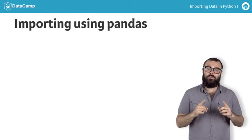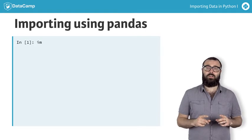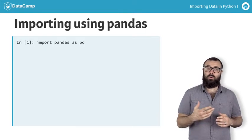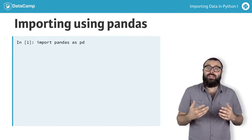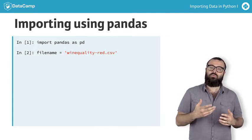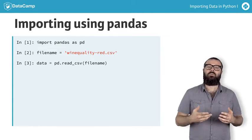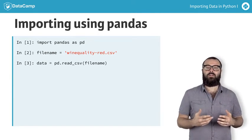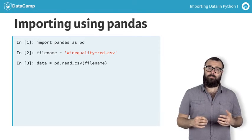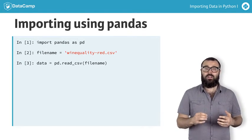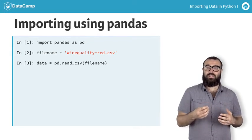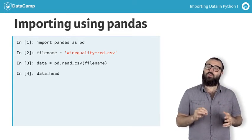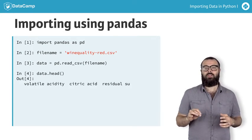To use Pandas, you first need to import it. Then, if we wish to import a CSV in the most basic case, all we need to do is call the function read_csv and supply it with a single argument, the name of the file. Having assigned the data frame to the variable data, we can check the first five rows of the data frame, including the header, with the command data.head.